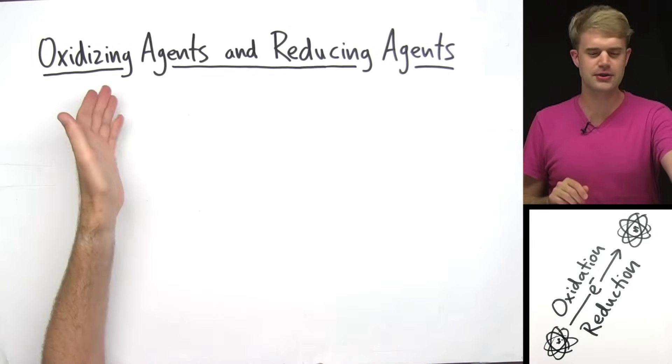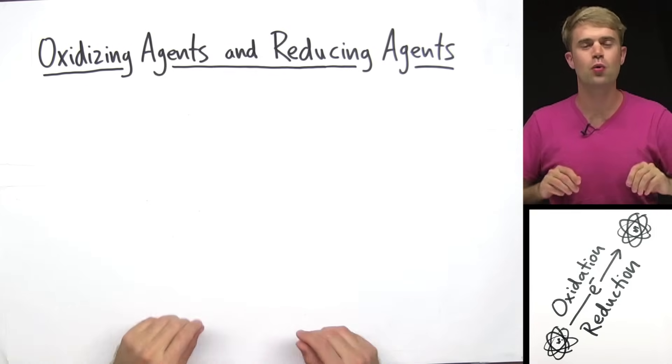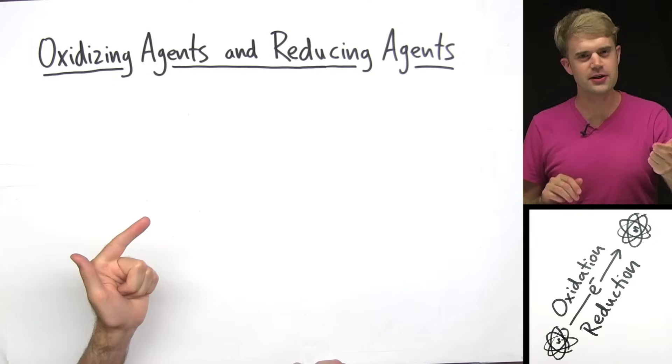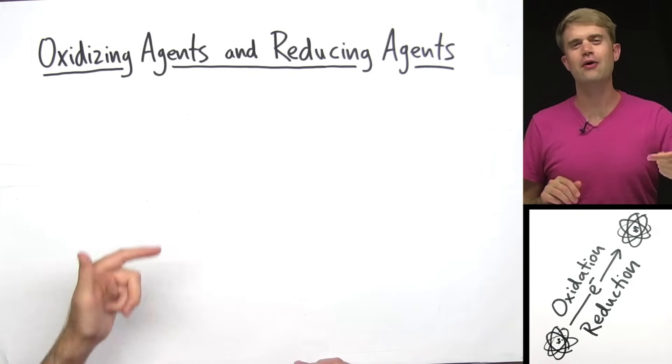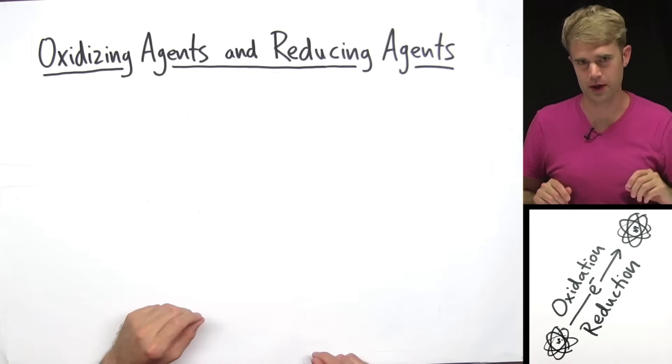In this video, we're going to talk about oxidizing agents and reducing agents. We're going to learn what they are, what they do, and how to identify them in chemical equations.